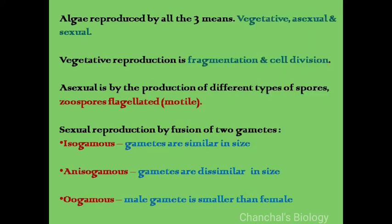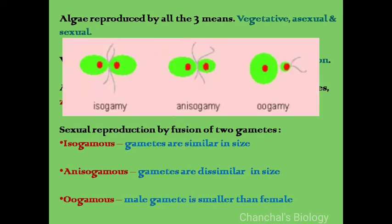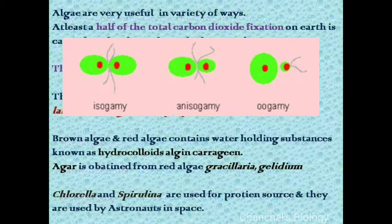Sexual reproduction is by the fusion of two gametes. They may be isogamous, which means the size of male and female gametes are similar. They may be anisogamous, in which gametes are dissimilar in size. And they may also be oogamous, in which the male gamete is smaller than the female gamete.